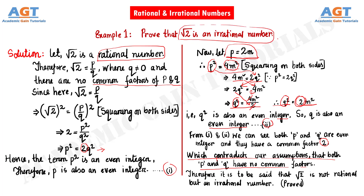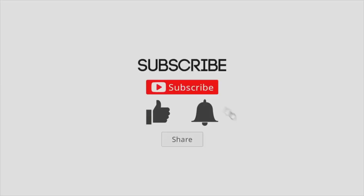So we have proved that root 2 is an irrational number. That was the problem solved easily. Thank you for watching this video.